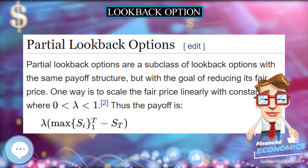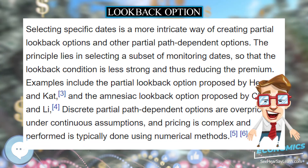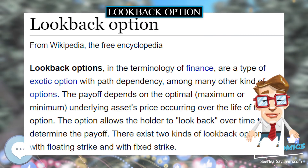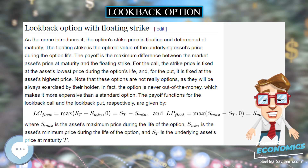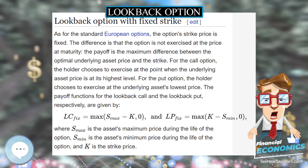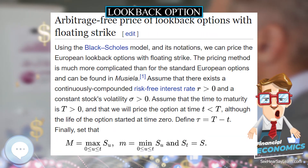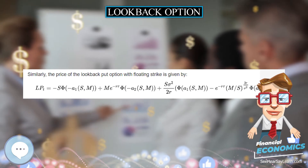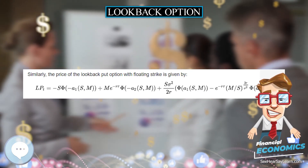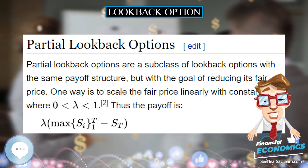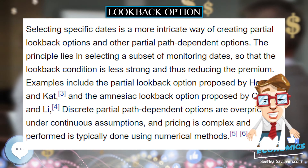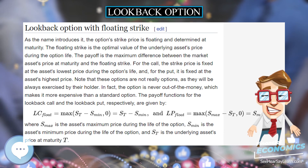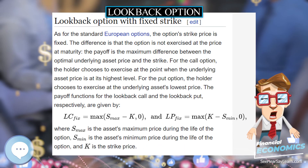Partial lookback options are a subclass of lookback options with the same payoff structure, but with the goal of reducing their fair price. One way is to scale the fair price linearly with a constant lambda, where 0 less than lambda less than 1. Selecting specific monitoring dates is a more intricate approach, reducing the premium by making the lookback condition less strong. Examples include the partial lookback option proposed by Heinen and Kat, and the amnesiac lookback option proposed by Chang and Li. Discrete partial path-dependent options are typically priced using numerical methods.